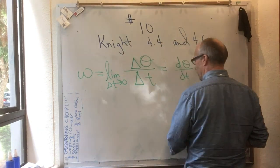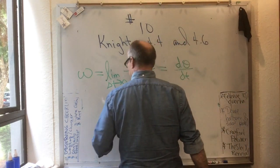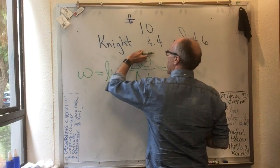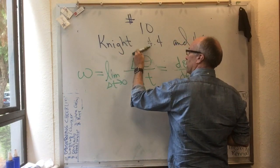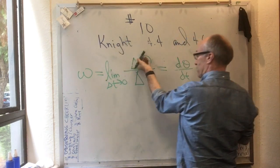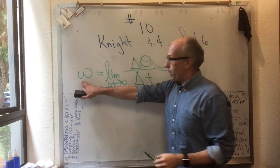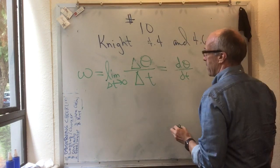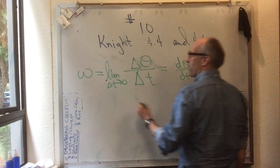So the next thing we can do, we can define angular acceleration. Maybe something is going around slowly for a while, or maybe it's picking up speed and going around faster and faster. That would represent a changing omega.